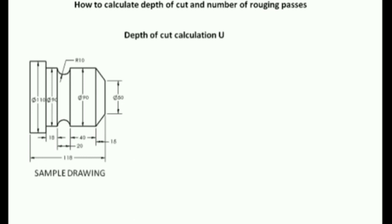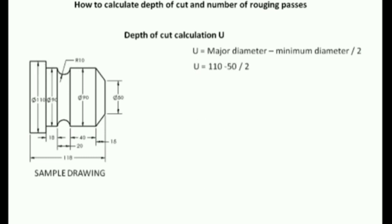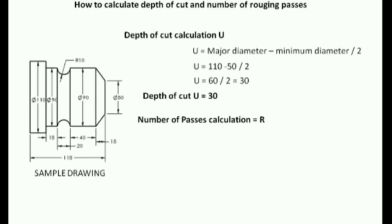You will see how the number of passes is determined. The major diameter minus minimum diameter divided by 2. In the drawing, the major diameter is 110, minimum diameter is 50. So 110 minus 50 divided by 2 — in the drawing, the number of passes value equals 30. The number of passes is equal to R.